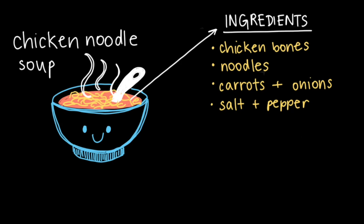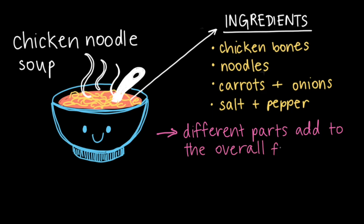But this video is supposed to be about cells — those tiny things that make up all living things on earth. So why am I telling you about chicken soup? Just like how each ingredient in chicken soup adds something unique to the soup's overall flavor and texture, a cell's different parts add something unique and necessary for the overall functioning of the cell. So let's take a look at some of the structures inside a cell and see how their functions come together to allow cells to carry out all the processes of life.